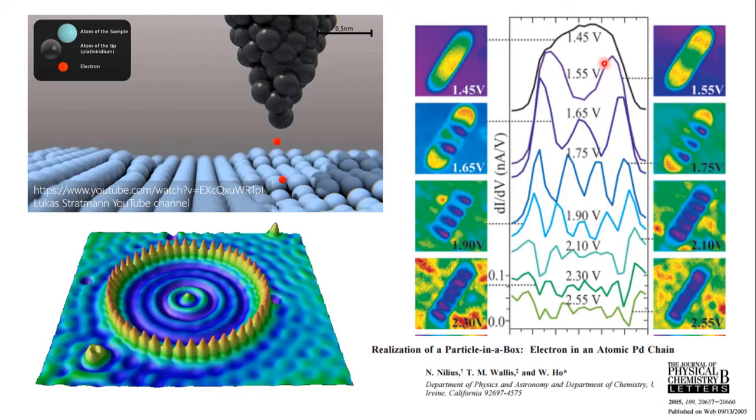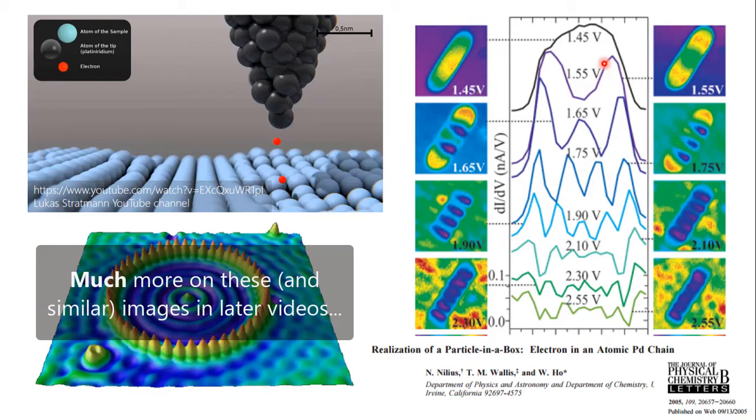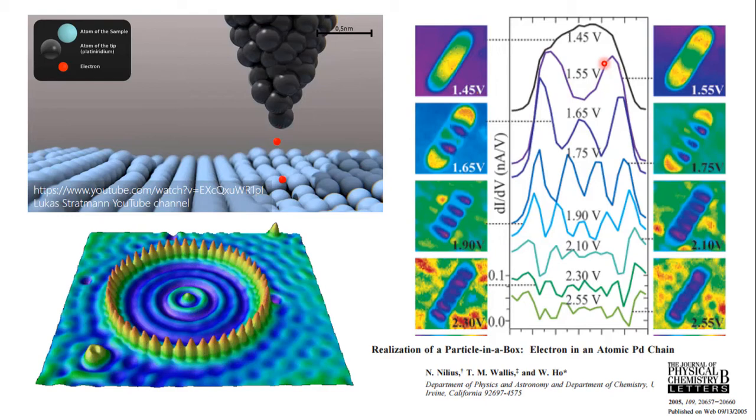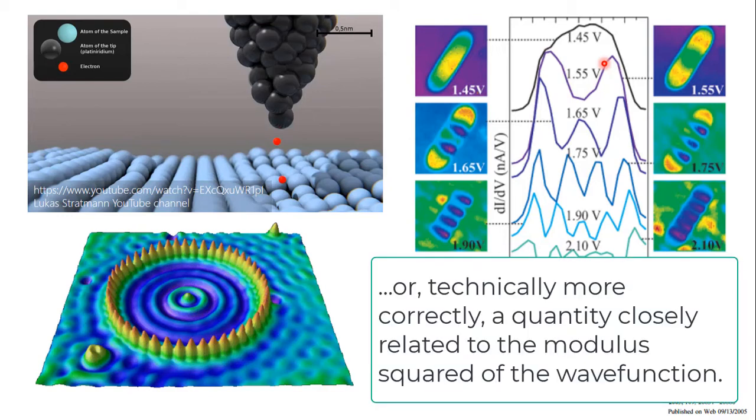The important thing to recognise is that STM — scanning tunnelling microscopy — is mapping out the probability density: the modulus squared of the wave function. So we can see that observable in experiment. Let's call a halt there. I'm keen — if you'll excuse the pun — to keep the quantum of time for these videos to the 15-20 minute limit. Next video is all about the double slit experiment and interpreting it using the same type of complex analysis we've just looked at. See you then.